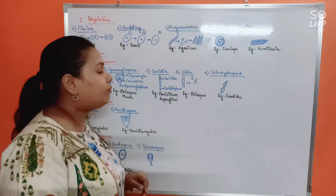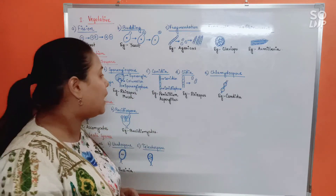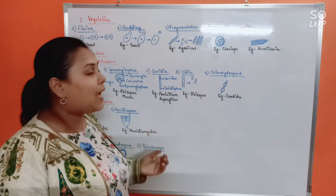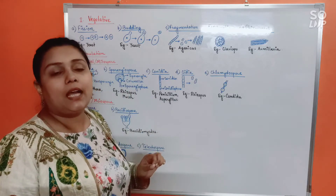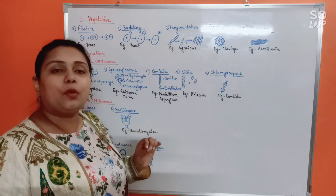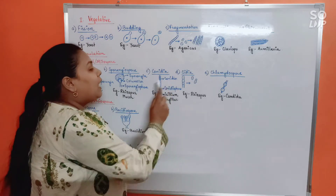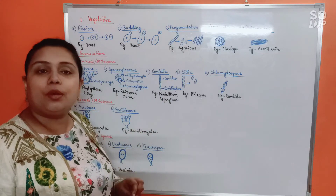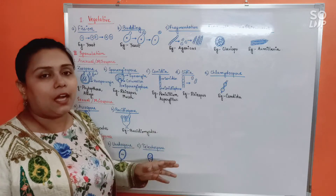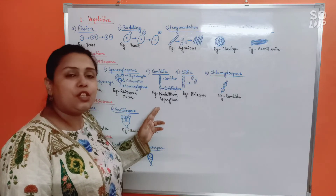Next is conidia. As seen in the diagram, conidia are also born on specialized hyphae called conidiophore. The conidiophore usually bears various branches and at its tip bears tiny spores called conidia, which are not born inside any structure — they are present naked at the tip of the conidiophore. So conidia are exogenous spores. Conidia are also known for being very colorful; they can be of different colors according to the species. Example: Penicillium and Aspergillus.